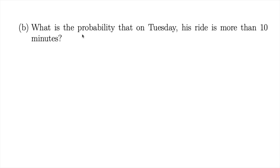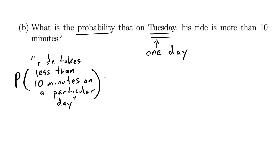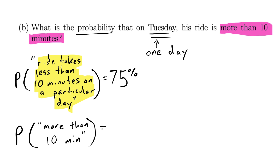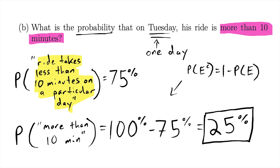Now we have: what is the probability that on Tuesday his ride is more than 10 minutes? We were given that the probability his ride takes less than 10 minutes is 75%. What this problem asks for is the probability that on a given day — they happen to say Tuesday, but it could be Wednesday or Thursday — his ride is more than 10 minutes long. That happens to be the complement. Either his ride takes less than 10 minutes or it takes more, so the answer is 100% minus 75% = 25%.